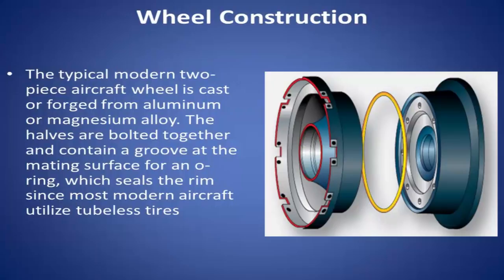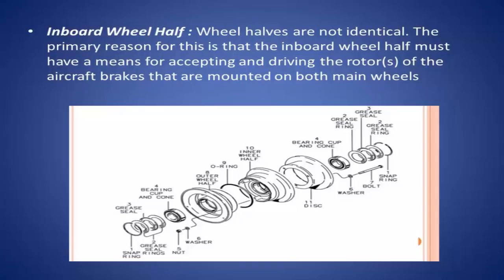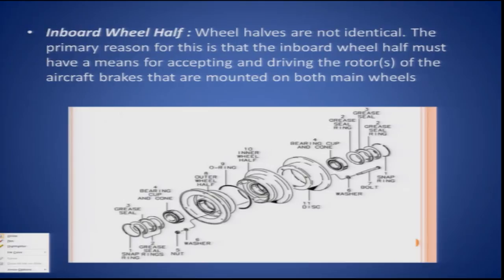In this slide you can see the diagram showing the outer wheel half and the inner wheel half, with the O-ring in between. There is a disc attached to one of the wheel halves — the inner wheel half. There are bearing cones and bearing cups on both sides, the outer side as well as the inner side. Beyond the bearings, you can see the grease seal rings and snap rings to lock the grease seals.